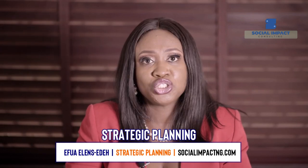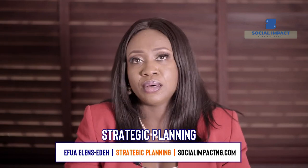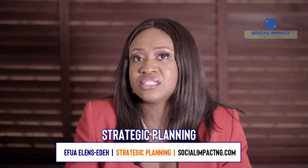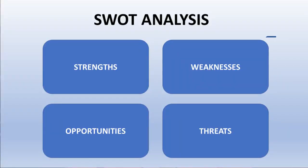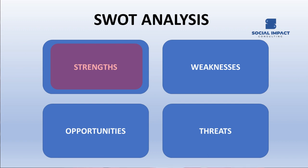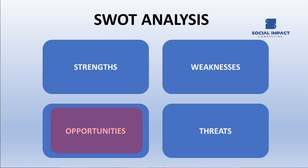The strength of your organization might be that you have relationships with a database of skill acquisition centers around the country. Your weakness may be that you don't have the civil society reach to get the women you need, or you don't have the relationships with government to reach that number of women. The opportunities could be that gender inclusion and gender mainstreaming is a hot topic in global philanthropy — it's an opportunity you can key into. A threat could be issues such as logistics, power outages, and people receiving the messaging you have to give them. That's a brief SWOT analysis.